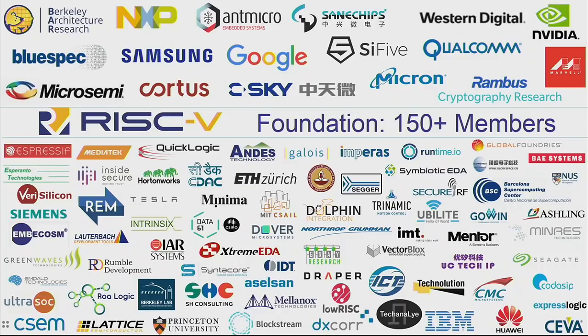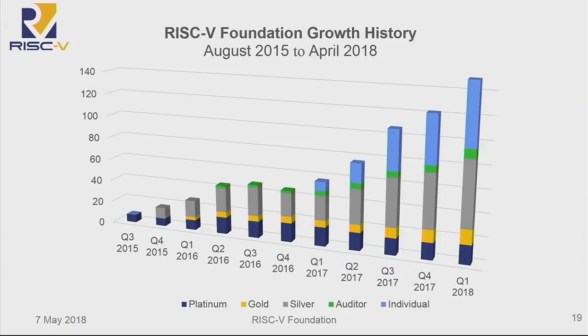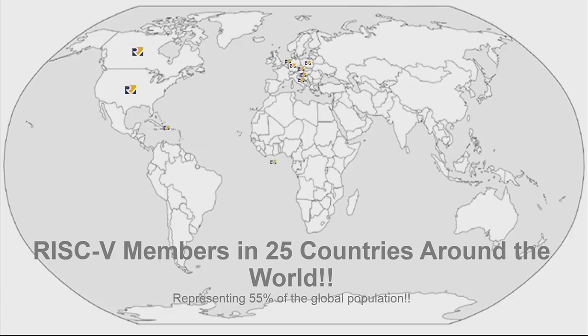We have more than 150 members, inclusive of individual members and corporate members. As of the end of March, we're over 150. This growth has been crazy, and it doesn't appear to be slowing down — that's close to 100 organizational members. With the Barcelona Supercomputing Center being our latest member, we now have a member in Spain, and that's 25 countries that the foundation is in around the world, representing about half the world's population.